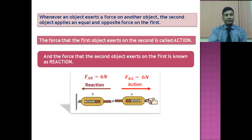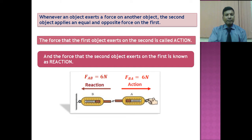There is a diagram for you. There are two spring balances — spring balance A and spring balance B. Spring balance B is fixed with the rigid support, whereas spring balance A is attached to spring balance B. Now, when you pull spring balance A, at that moment you apply an action on B by A. So the force becomes FBA — force acts on B by A, and this becomes action.